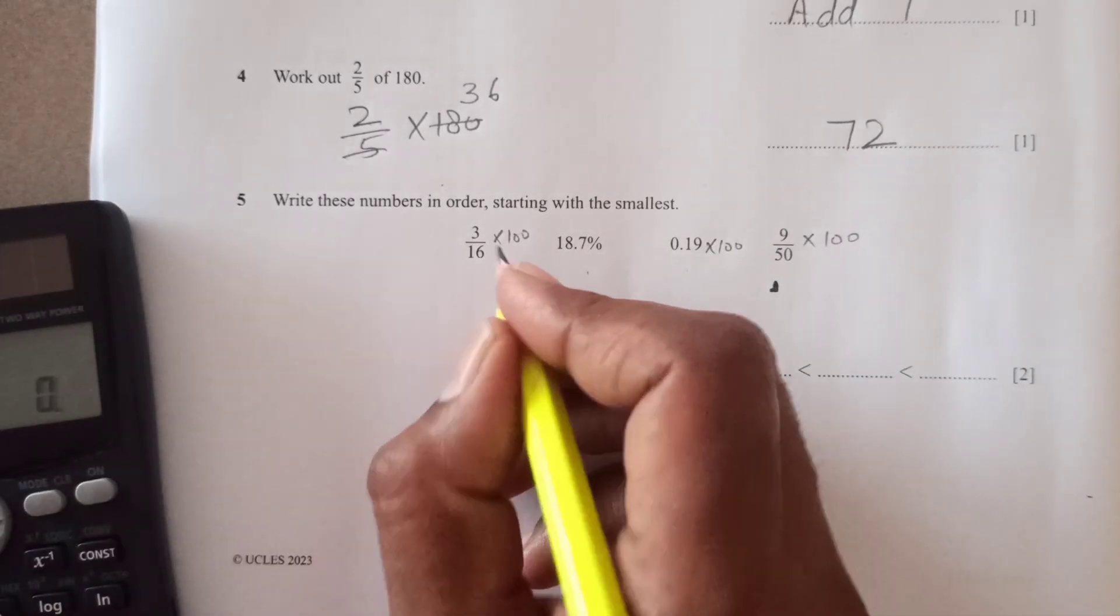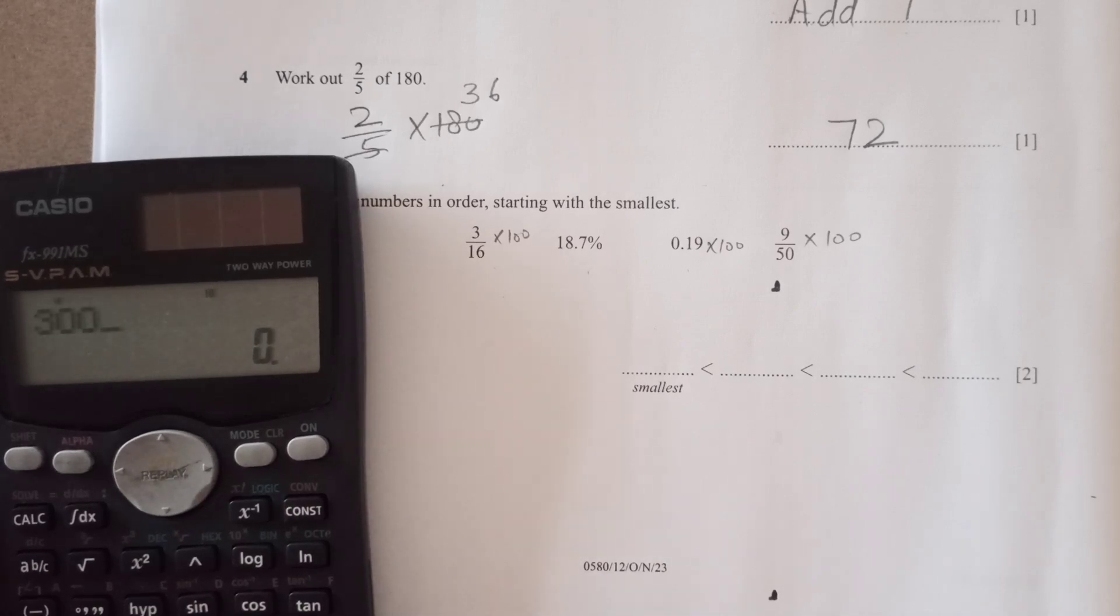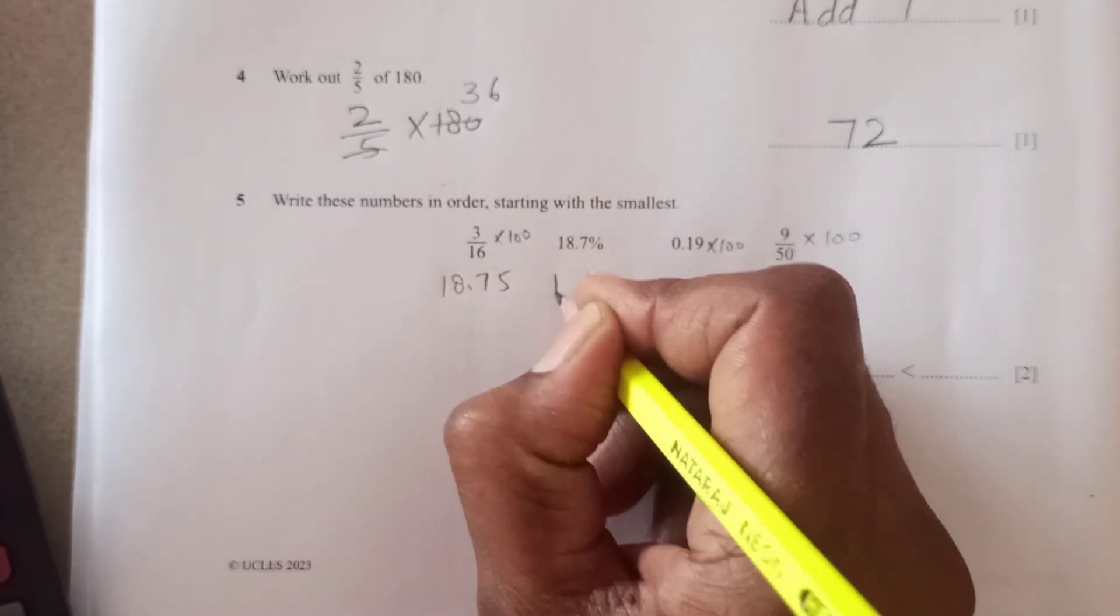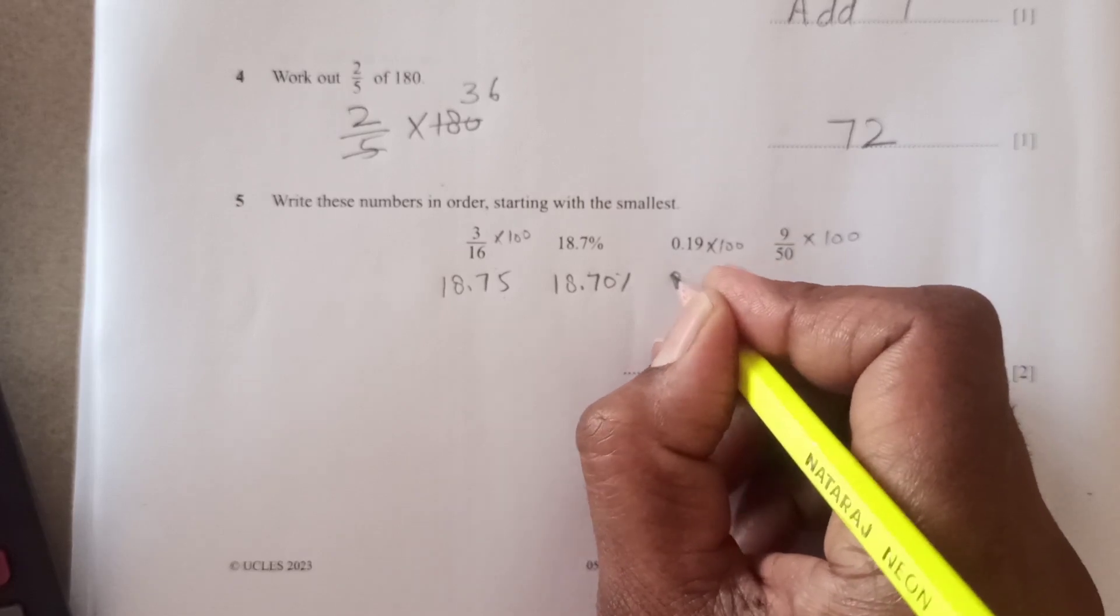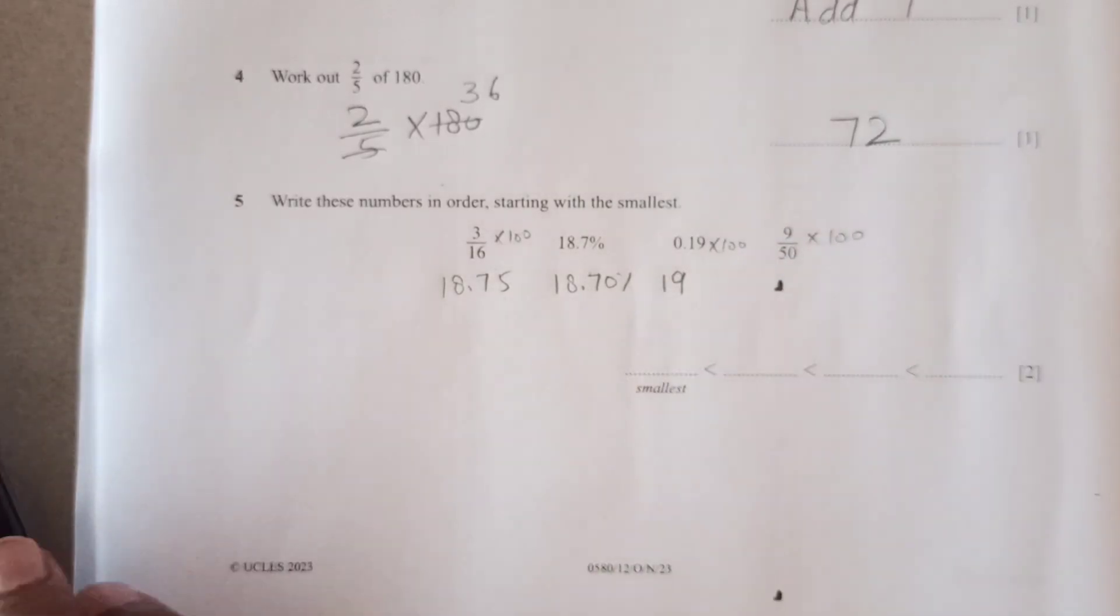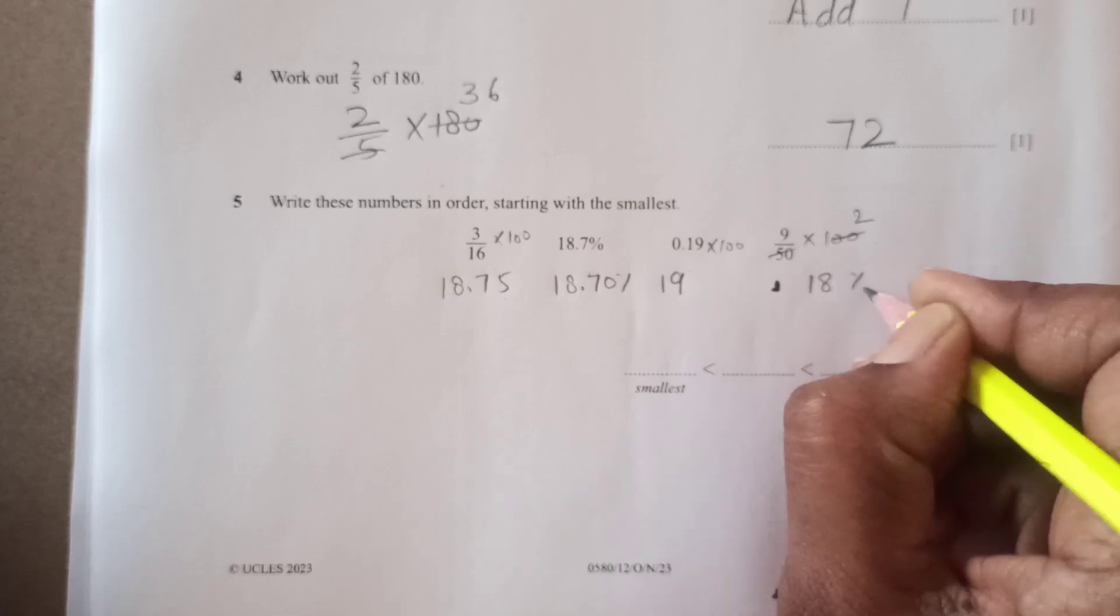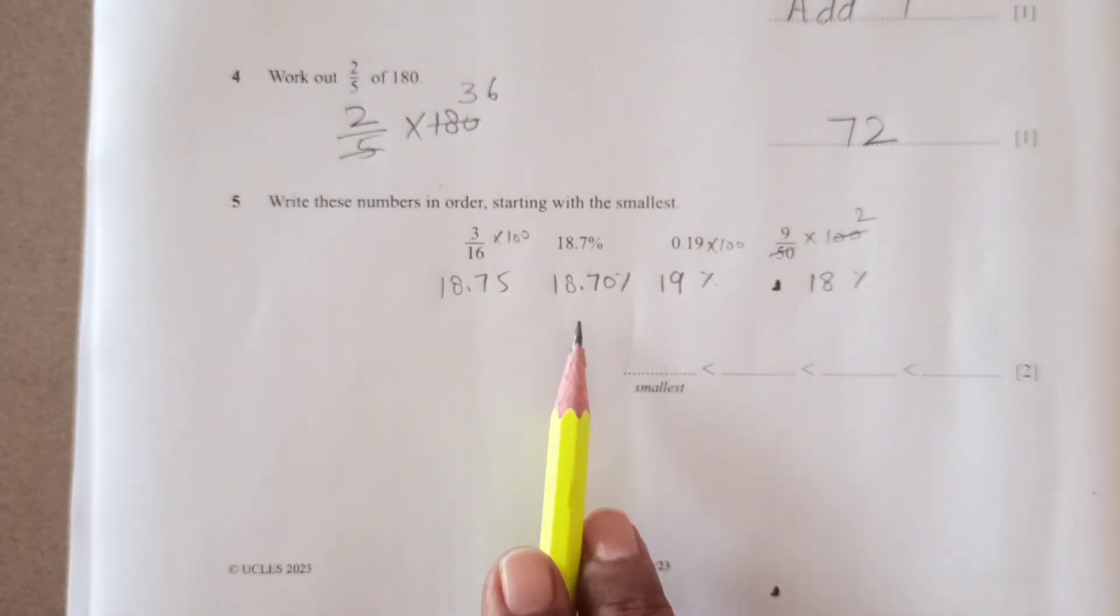And then multiply by 100 over here. So then this will be 3 over 16. Let me see 300 divided by 16, it is 18.75. This is 18.75. This is 18.70. This will be 19. And this one is 50 times equal to 18.75.